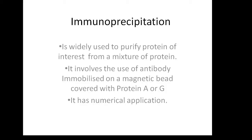The antibody used is usually immobilized on a magnetic bead covered with protein A or G, which we will discuss in the next slide. This immunoprecipitation technique has numerous applications, such as to isolate or detect our protein of interest.